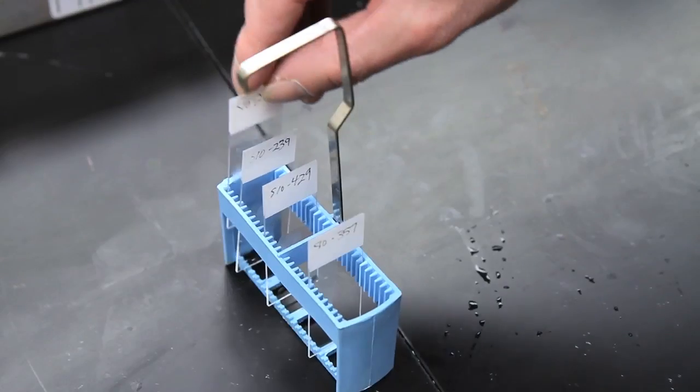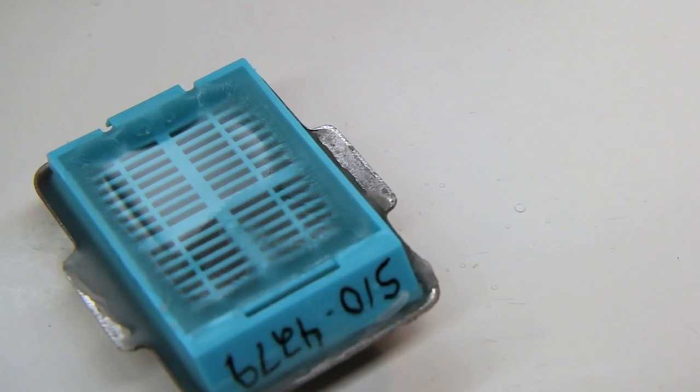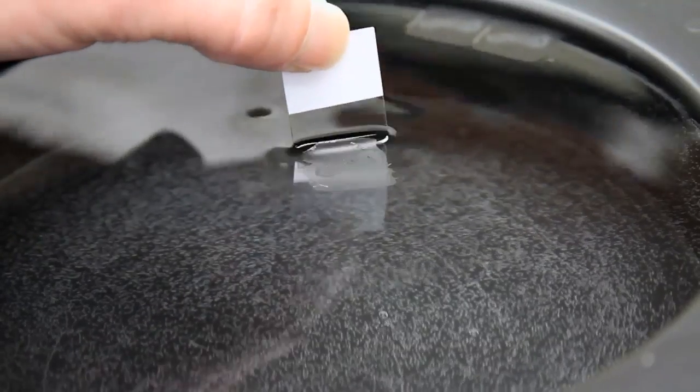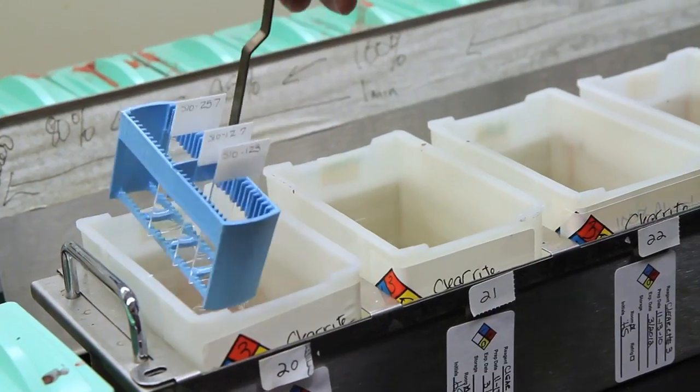The primary role the histo-technician plays in a histology lab is to process tissue, to embed the tissue, to cut the tissue, to make slides, to stain the slides, to give them to the pathologist for review.